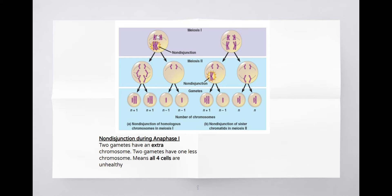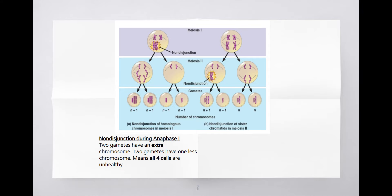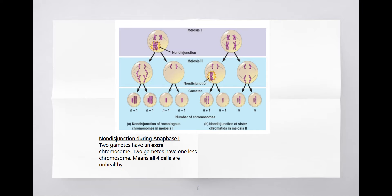Looking at non-disjunction during Anaphase 1: here is a cell going through anaphase where the homologous chromosomes are separating normally, but in non-disjunction during Anaphase 1, these two chromosomes decide to stay together. When that happens, only one chromosome goes into one cell and the extra goes into the other. The end result after both meiosis 1 and meiosis 2 is that you end up with gametes that have extras and gametes that are missing chromosomes.